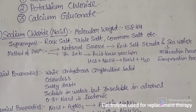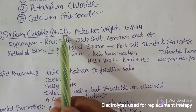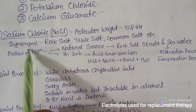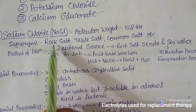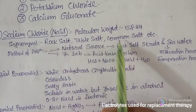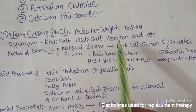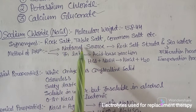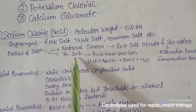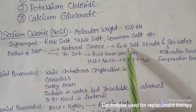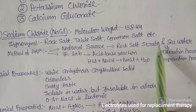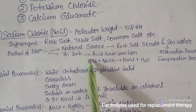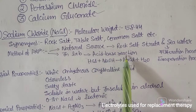For sodium chloride (NaCl), the molecular weight is 58.44. Synonyms include rock salt, table salt, and common salt. Coming to the method of preparation, there are two methods: it can be obtained from a natural source and can also be prepared in the laboratory. From natural sources, it can be obtained from rock salt strata, and from sea water by filtration and evaporation processes.